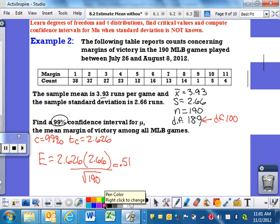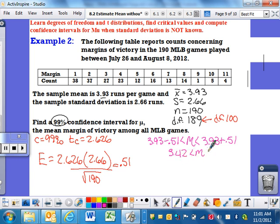So then you just need to build your interval. I don't have the formulas written here, but it's x bar minus your error. So my x bar is 3.93 minus my error, and then it's x bar plus your error. And you will end up getting your interval. So when you add and subtract the 0.51, you end up getting 3.42 to 4.44. And now you're not done.